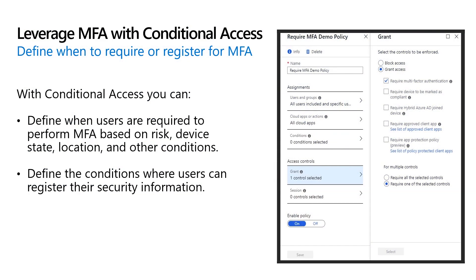Additionally, you can set controls around how users perform their initial registration of their security information. This is designed to help mitigate users who exist in your directory but have not yet registered for MFA. If these users are compromised, a bad actor can potentially register their own MFA information. With conditional access, you can prevent this by requiring users to register from a trusted device or require another access control.